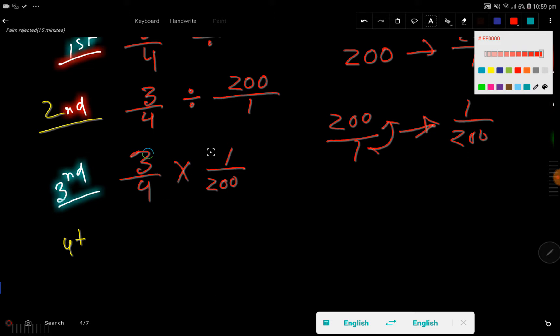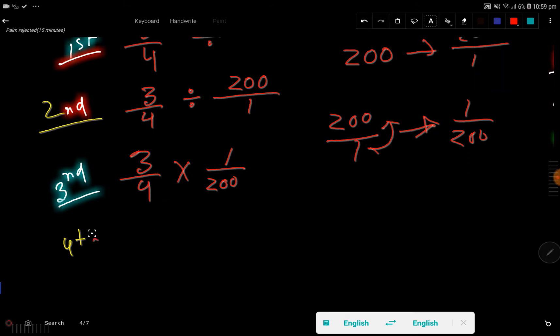Now I will multiply top to top and bottom to bottom. Then in the fourth step I will get a new fraction.